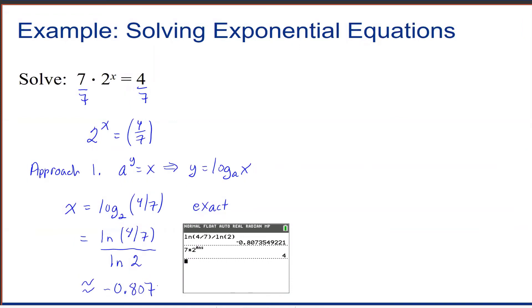If you want to check your answer, you can just multiply that out. So 2 raised to the negative 0.807 is about 0.57, times 7 is approximately 4. There's a little bit of rounding error, but it does in fact work.